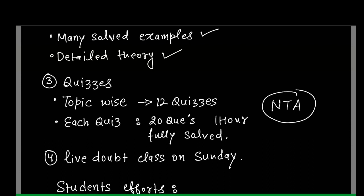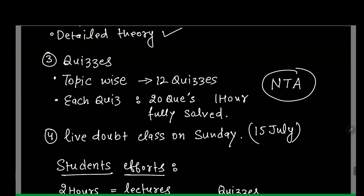After quizzes, there will be a live doubt class on Sunday. You all can attend doubt classes till 15th July. The course runs from 1st July to 15th July and it is free. After that, you can still see lectures, notes, and quizzes, but doubt classes will only be between 1st to 15th July.